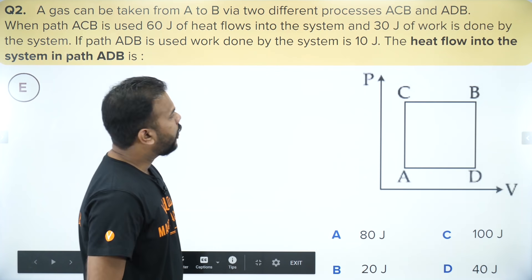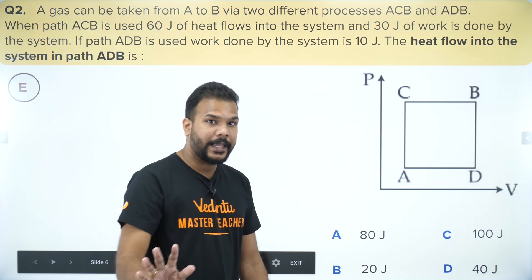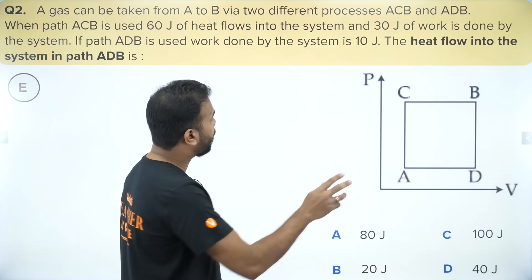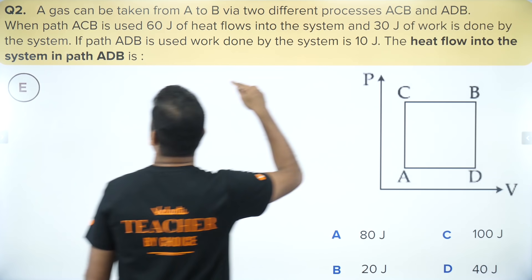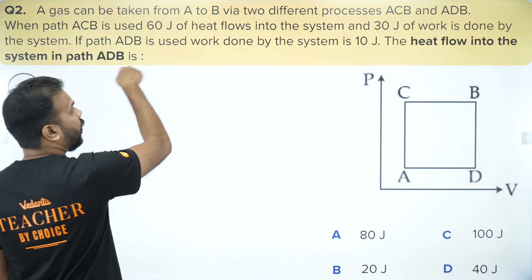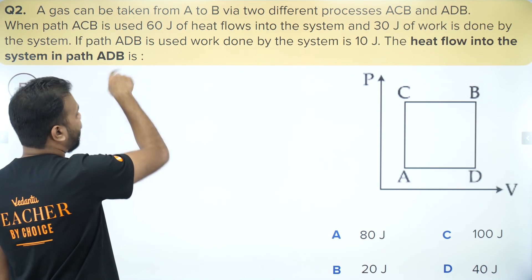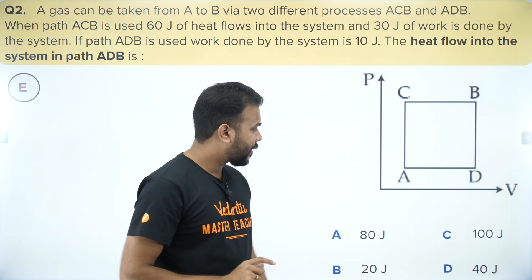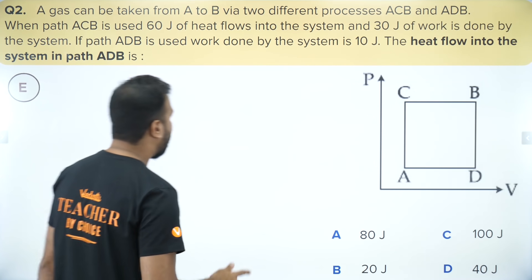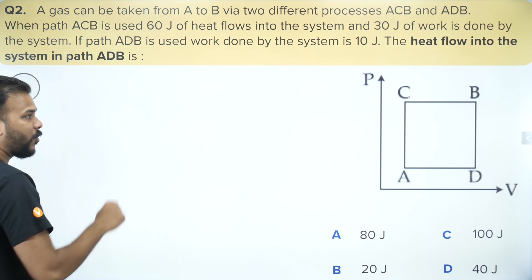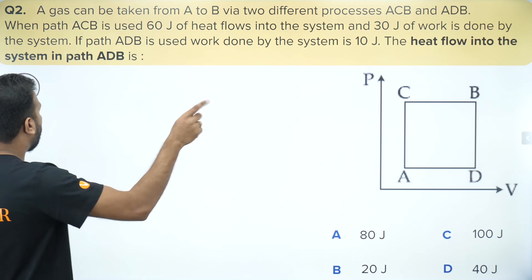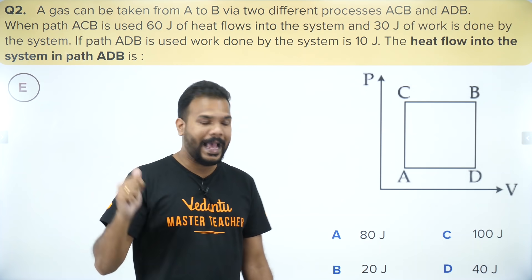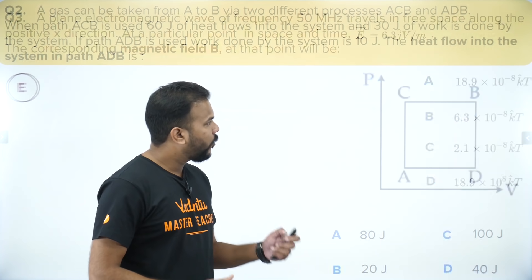Next question has a PV diagram, so it is from thermodynamics. The question asks for heat flow in process path ADB. The first law of thermodynamics is easily applicable — find internal energy from one of the processes. Marking it as easy.